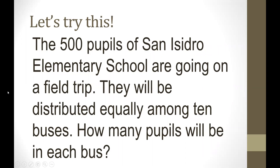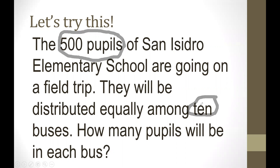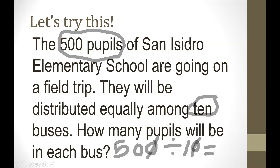The next example: 500 pupils of San Isidro Elementary School are going on a field trip. They will be distributed equally among 10 buses. How many pupils will be in each bus? The given are 500 pupils and 10 buses. So we have 500 divided by 10. Cancel one zero in the divisor and one zero in the dividend. After canceling, 50 divided by 1 equals 50 pupils.